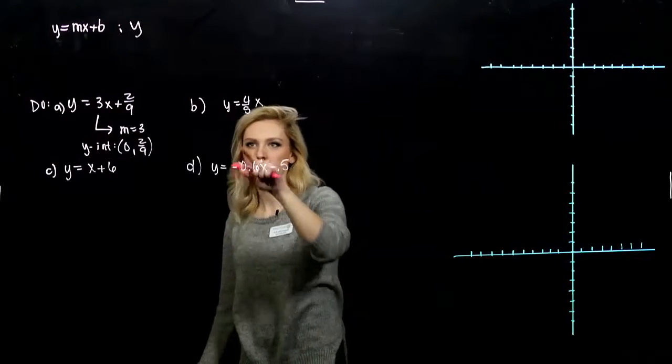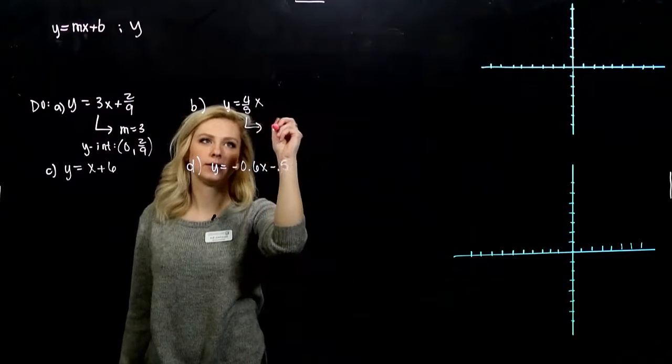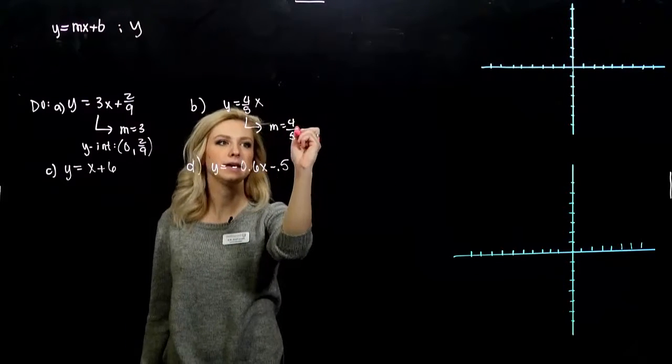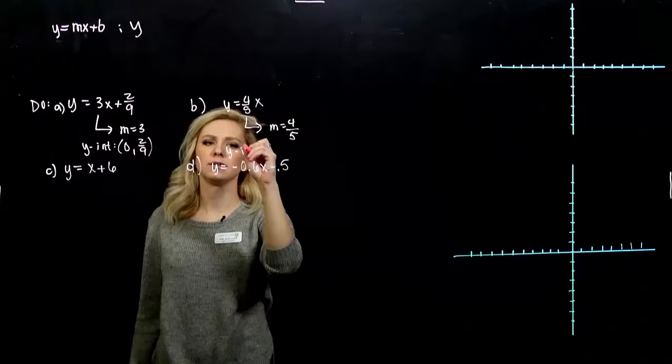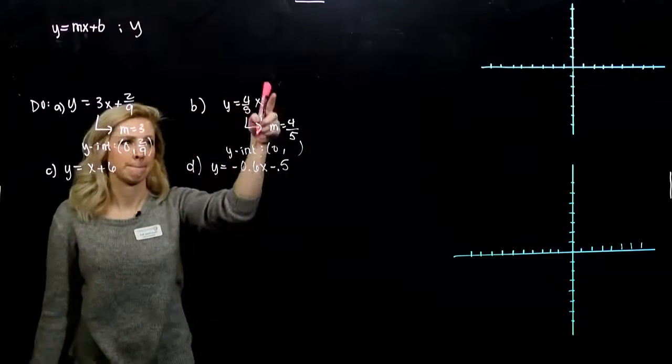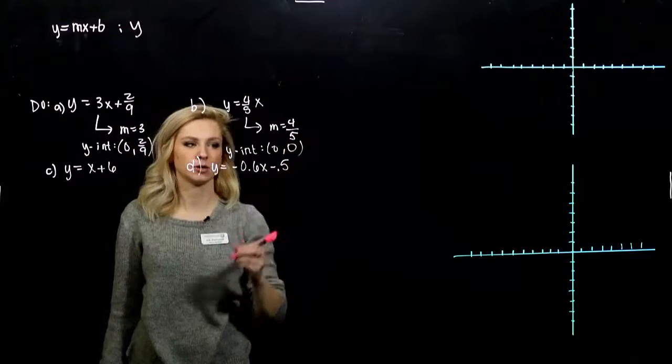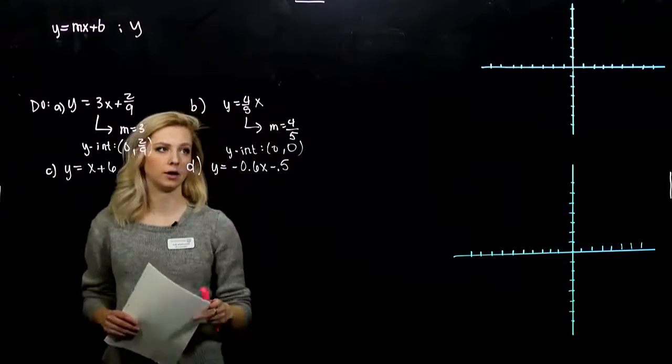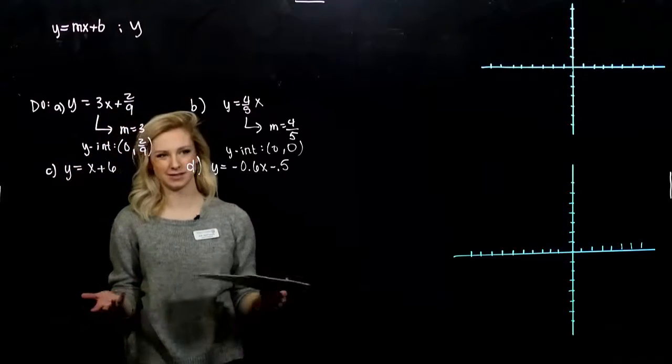So part b, again, y is isolated. Slope is 4 fifths. And what is our y-intercept in this case? Goes through 0 what? 0, 0 goes through the origin. Since I don't have a specific y-intercept that's different from the origin.